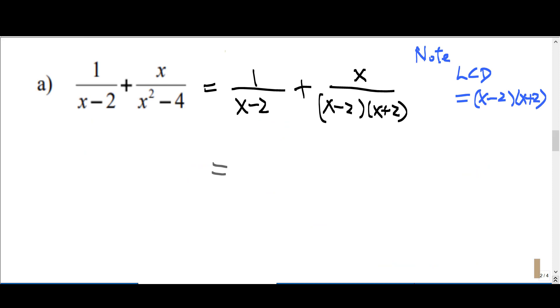Now we try to add these two terms together. We already know the LCD. Try to make the LCD in each term's denominator. The first term is 1 over x minus 2. To make the LCD, you must multiply by x plus 2.